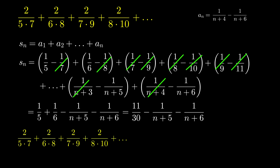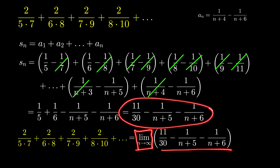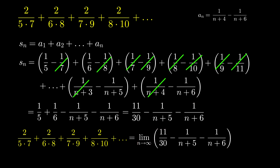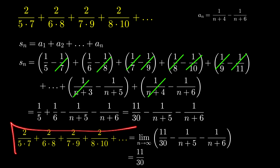Therefore, what is the sum of this series? It is equal to the number approached by S sub n as n approaches infinity — that is, the limit of this expression as n approaches infinity. As n approaches infinity, 1 over (n plus 5) and 1 over (n plus 6) both approach 0. Therefore, this expression approaches 11 over 30, and this is the sum of the infinite series.